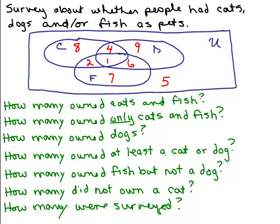How many owned cats and fish? We concentrate on the intersection of cats and fish, ignoring whether or not they had a dog. Here's the cat set and the fish set. In their intersection there are two numbers: 2 people who didn't own a dog and 1 person who happened to own a dog. So altogether, how many owned cats and fish? That would be 3.